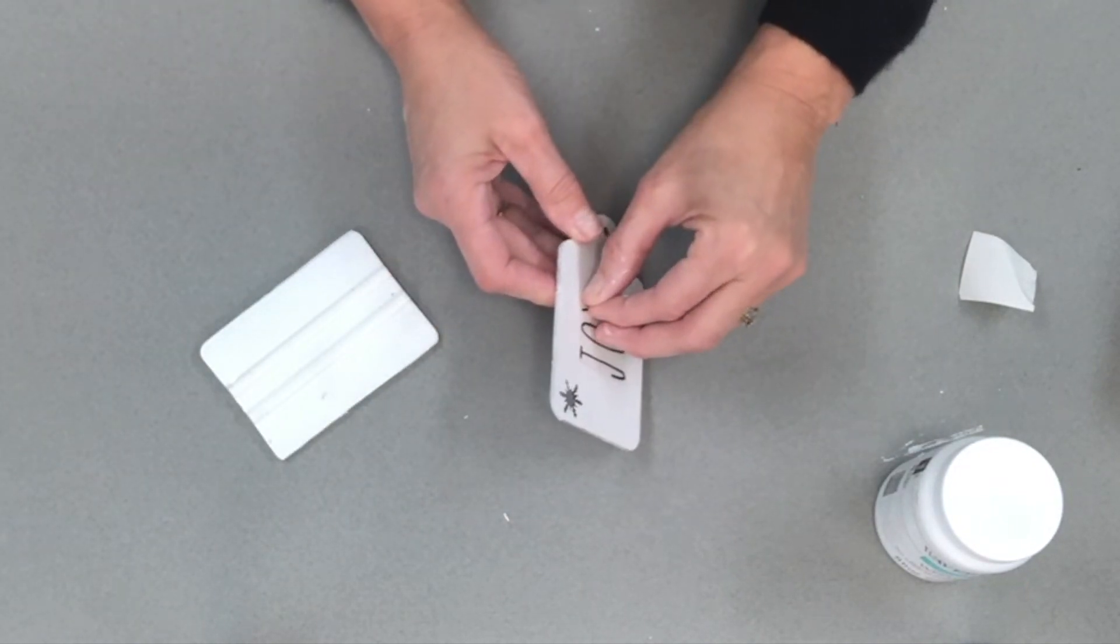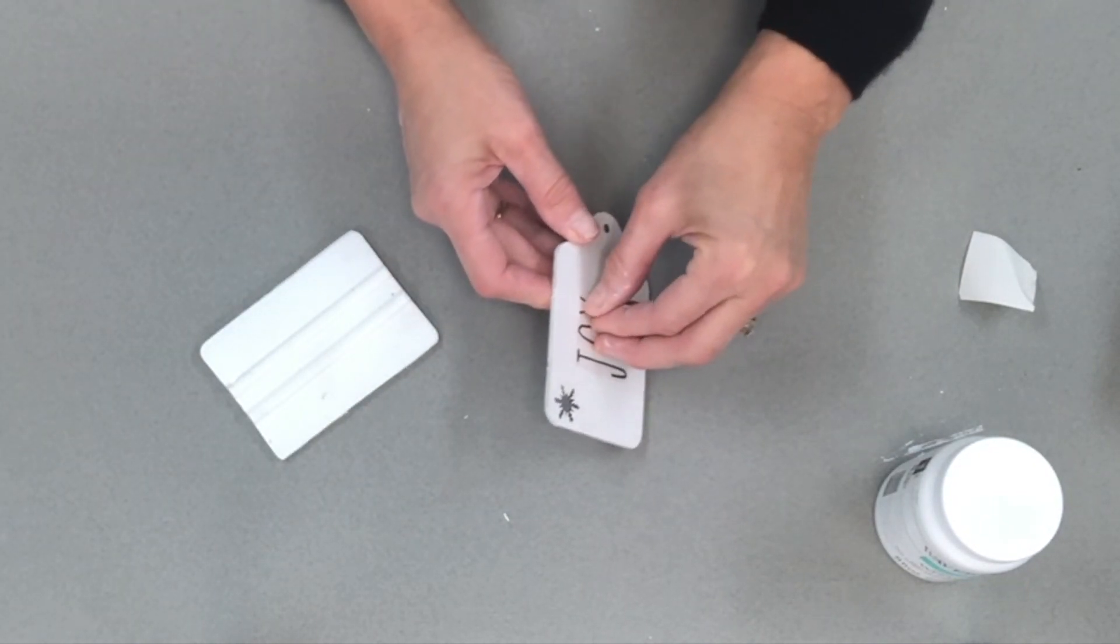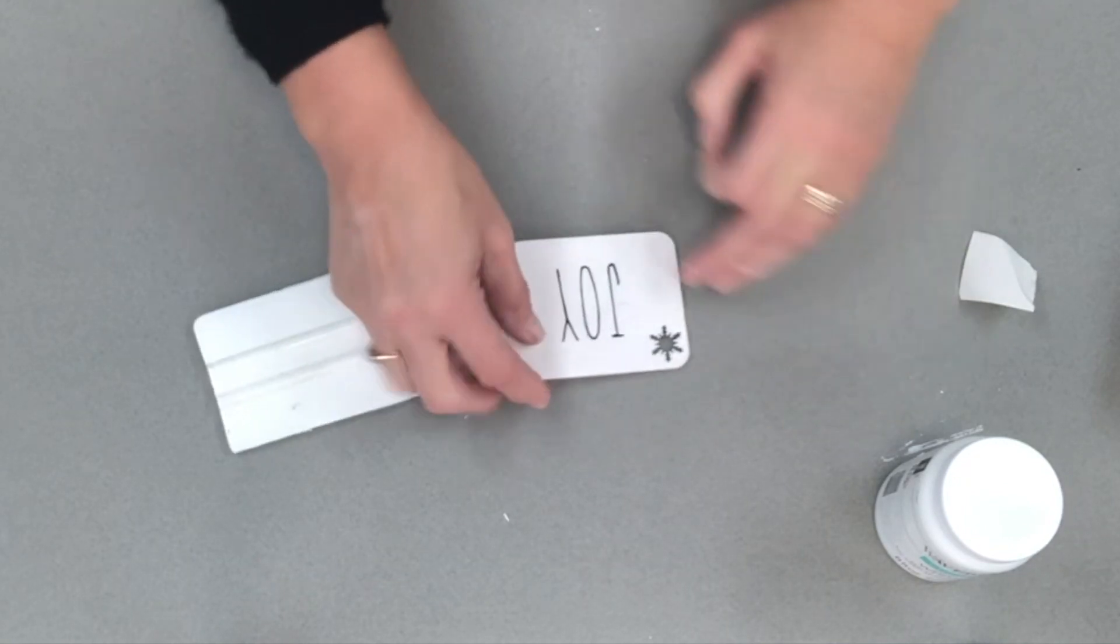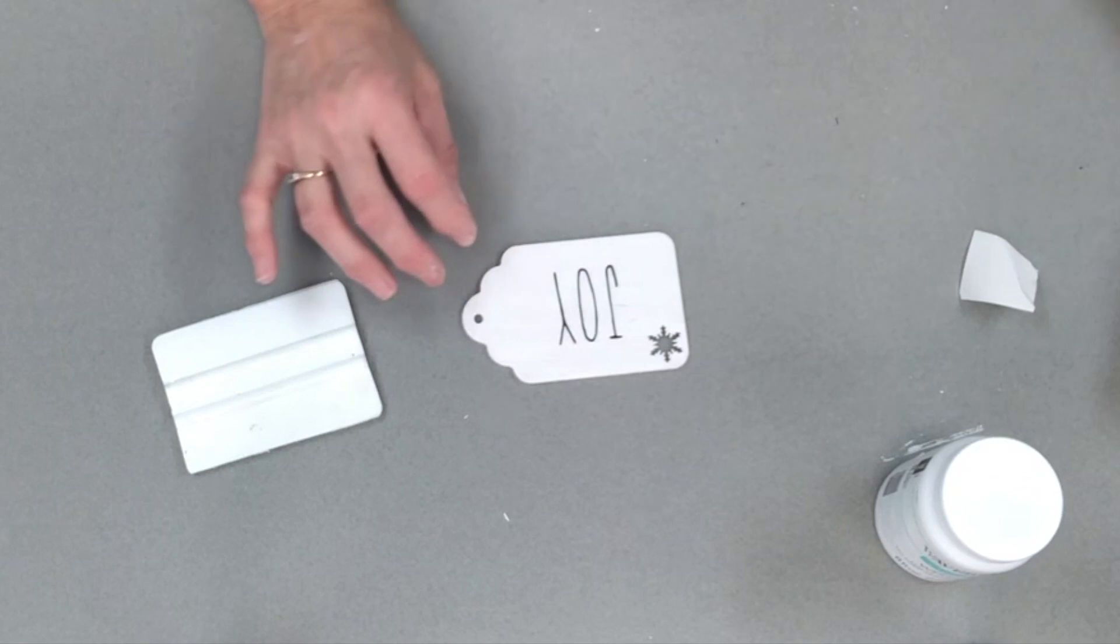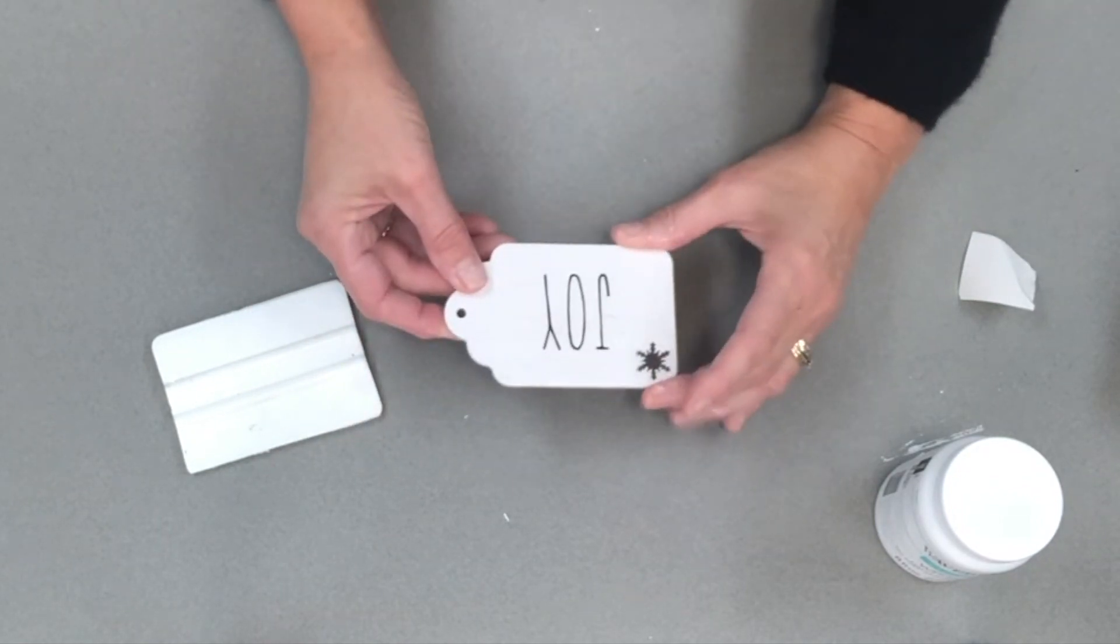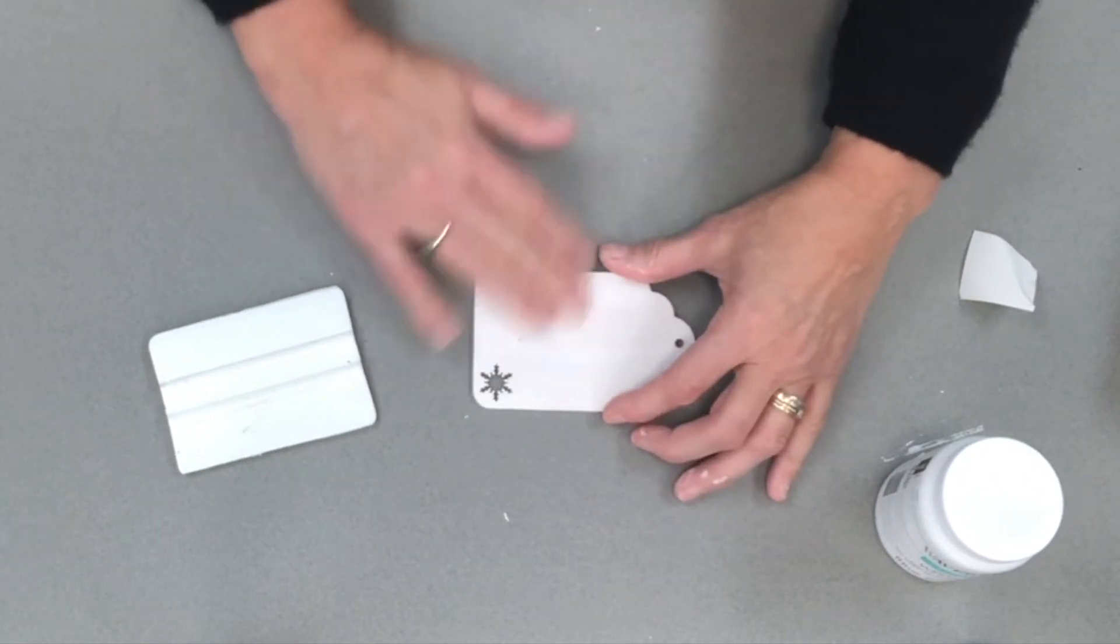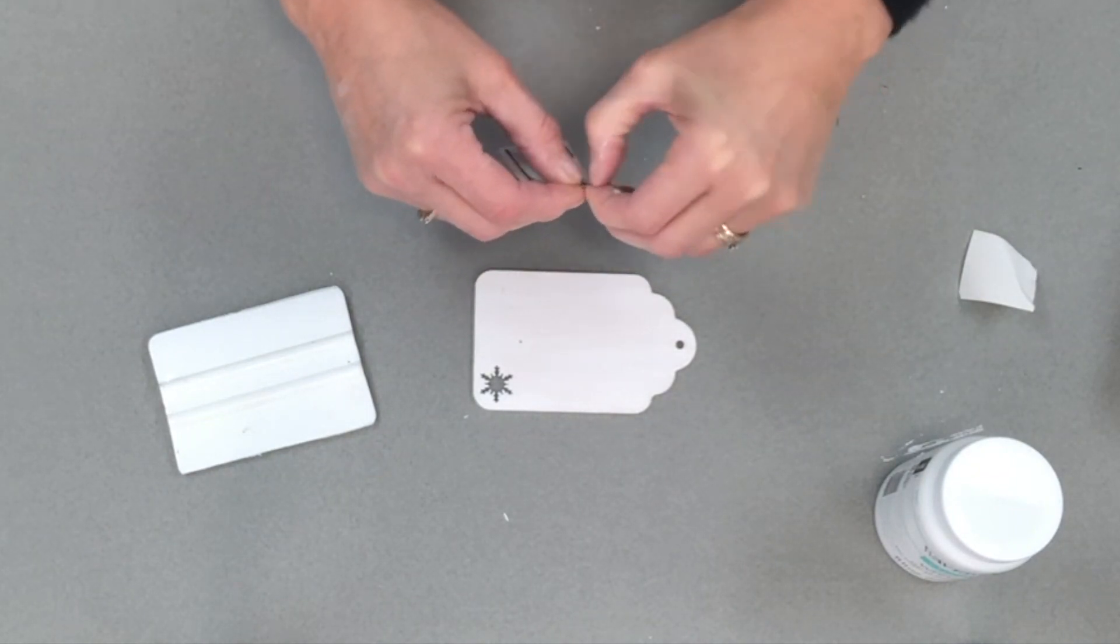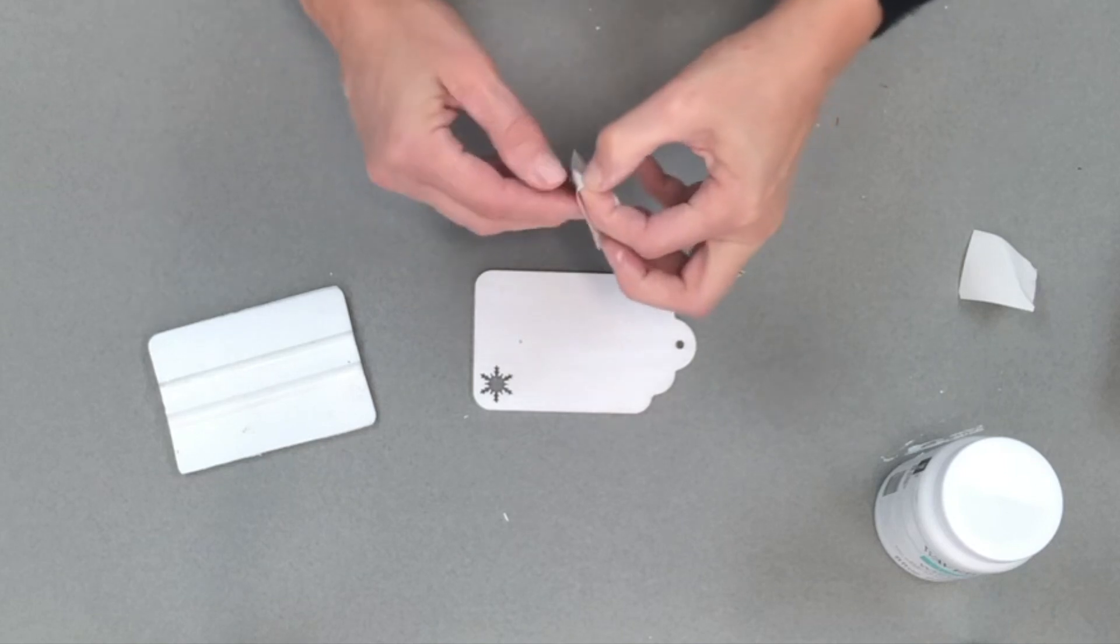I just absolutely love all of the Rae Dunn ornaments and different bowls and cups that you see in the shops, and so that's why I chose that font. But you guys can go with whatever font you like. You might even be able to find some rub-off stickers that you could use for yours. Now I'm going to go ahead and put joy on both the front and the back because my tags are for my Christmas tree and you know how